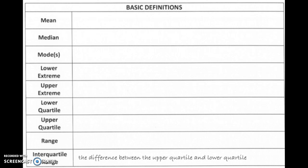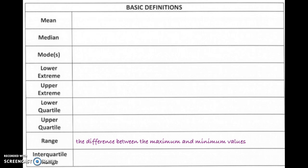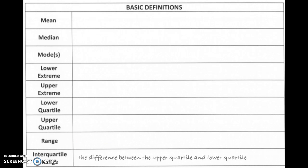The range is the difference between the maximum and the minimum values, so just subtract. And then the interquartile range is the difference between the upper quartile and the lower quartile. So similar to the full range, but you're just taking the upper quartile and subtracting the lower quartile.